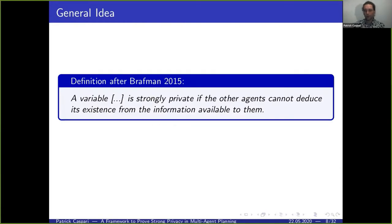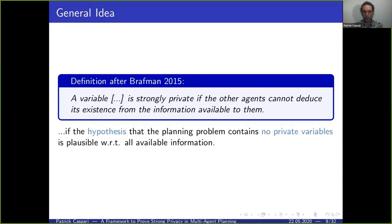For the definition of strong privacy, we use a definition from Ronald Brachmann from a 2015 paper, which states that a variable is strongly private if the other agents cannot deduce its existence from the information available to them. To reformulate this from the observer's view: the observer holds the base hypothesis that the planning problem does not contain any private variables, and checks whether this hypothesis is plausible with respect to all available information.